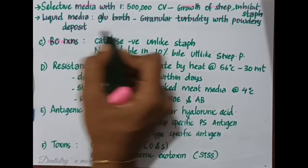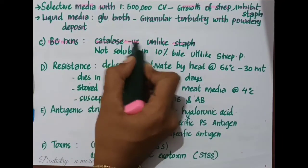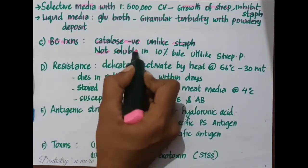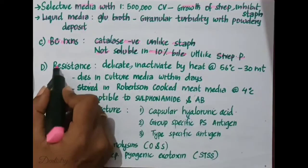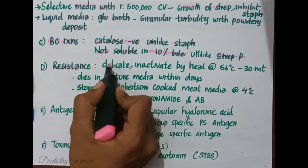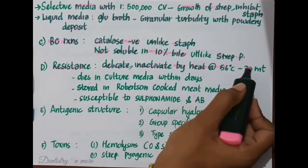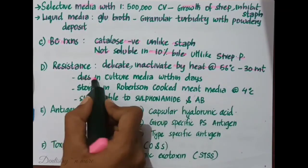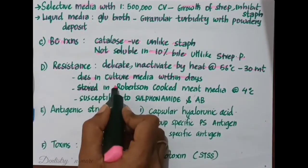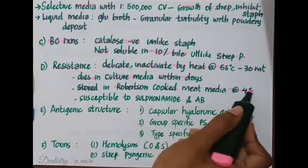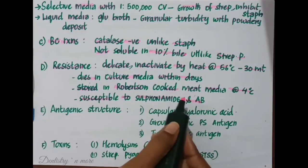In biochemical reactions, unlike Staphylococcus, Streptococcus are catalase negative. They are non-soluble in 10% bile, unlike Streptococcus pneumoniae. Regarding resistance, they are very delicate and get inactivated by heat at 56°C for 30 minutes. They die in culture media within days but can be stored in Robertson's cooked meat media at 4°C, and they are susceptible to sulfonamides and antibiotics.